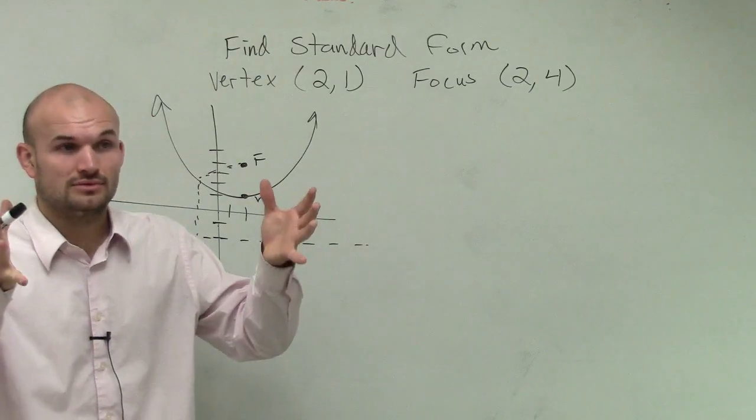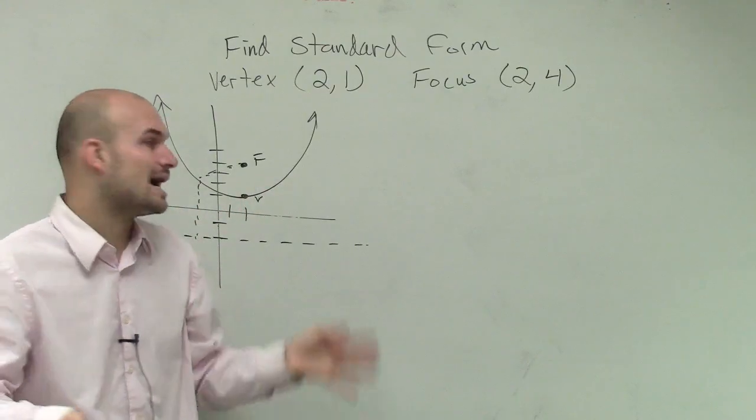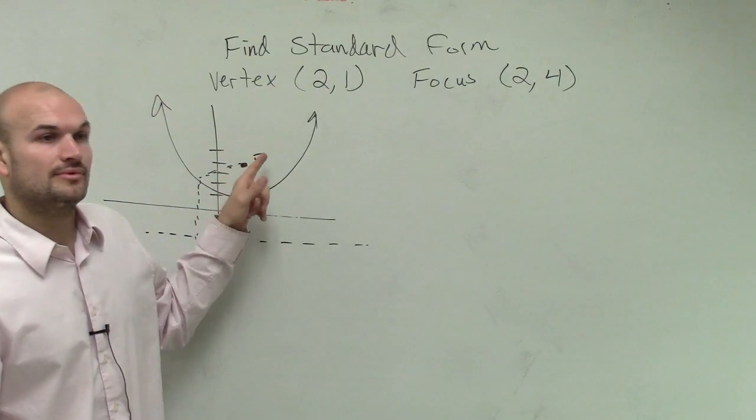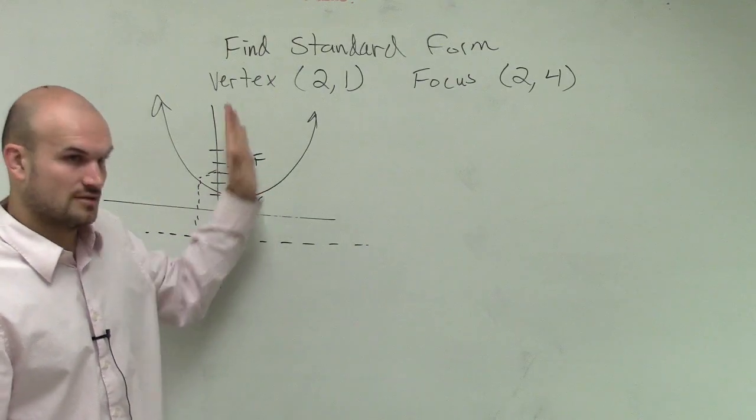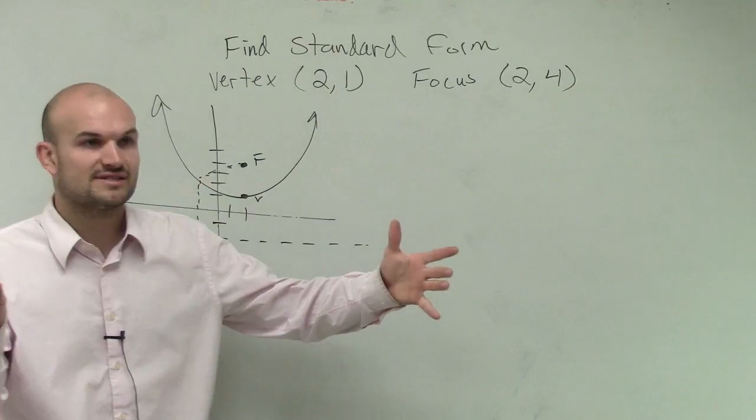Remember, when it's a vertical, when you have a vertical, it means it opens up or opens down. Yes, your focus and your vertex are going to have the same x-coordinate. And if it was horizontal, they'd have the same y-coordinate.